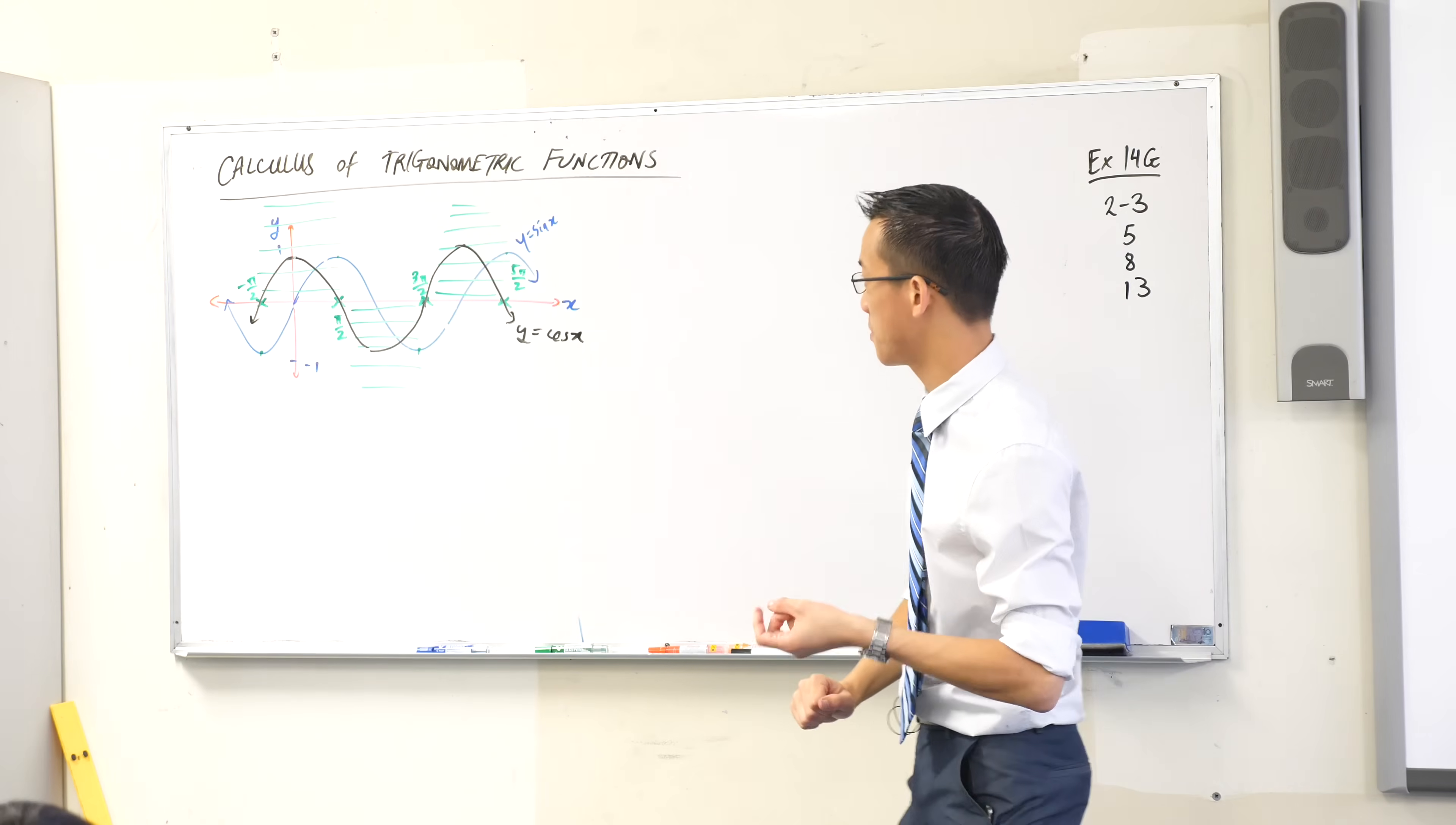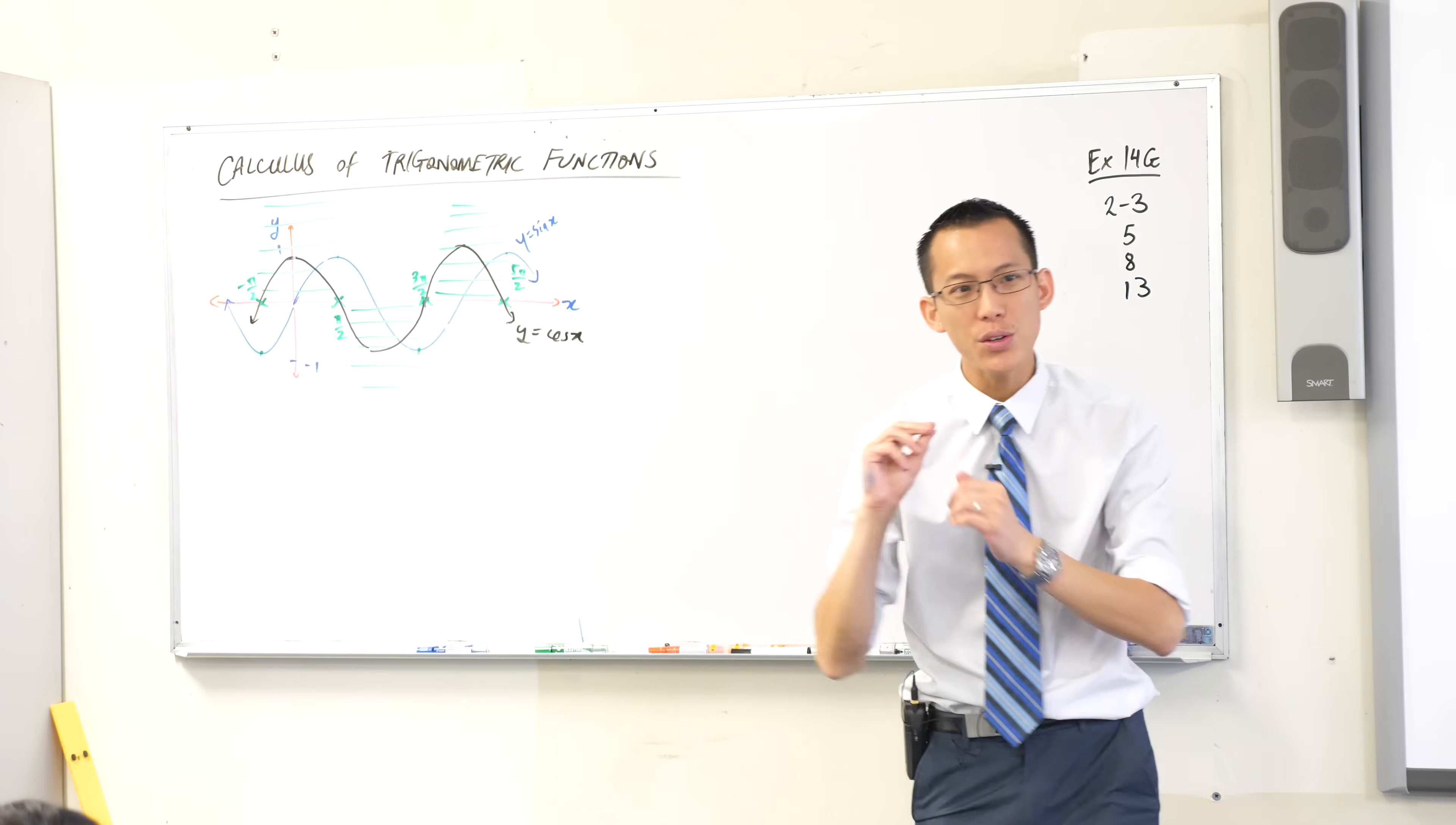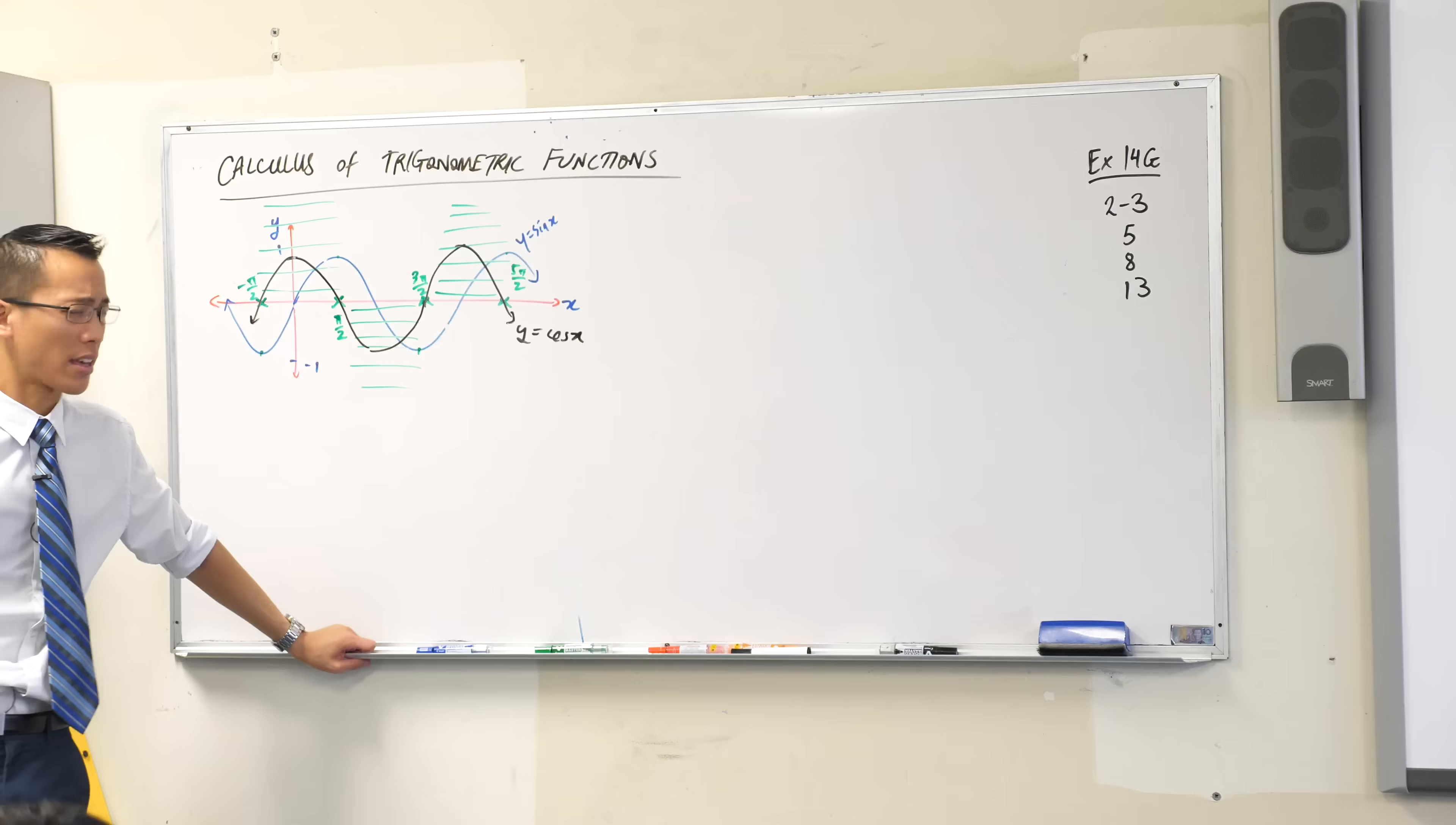It goes through all of those regions that I painted and it even tells you a little bit more. For instance we looked at stationary points but the sine curve also has points of inflection. Can you see where they are?